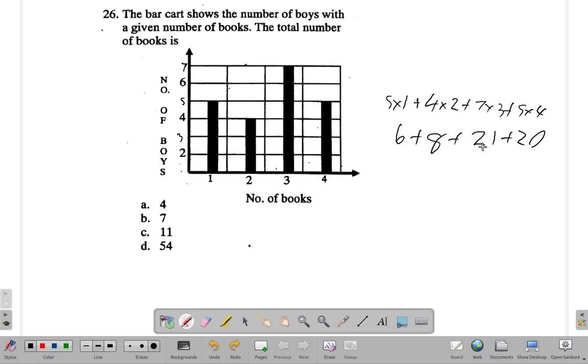All right. And remember, you follow the priority order. You don't say 1 plus 4 and then multiply. You do the multiplication first, then do the addition. So 8 and 6...